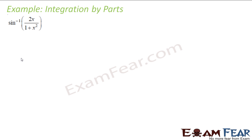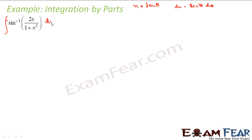Let us take this question — it's a little more difficult. We have the integral of sin⁻¹(2x/(1+x²)). There is only one part here, so for expressions involving 1+x² we generally take x = tan θ. With a = 1, set x = tan θ, so dx = sec²θ dθ.